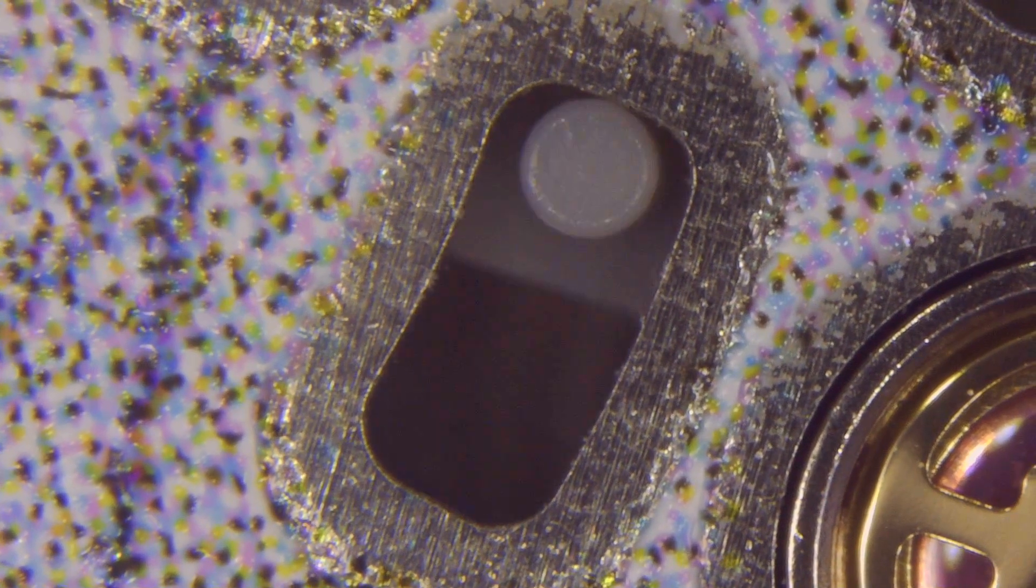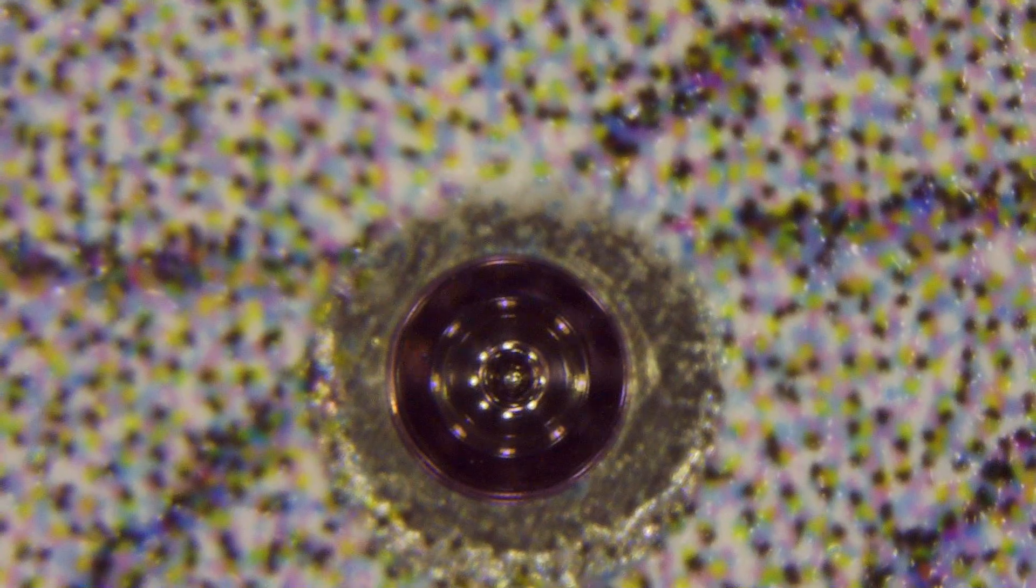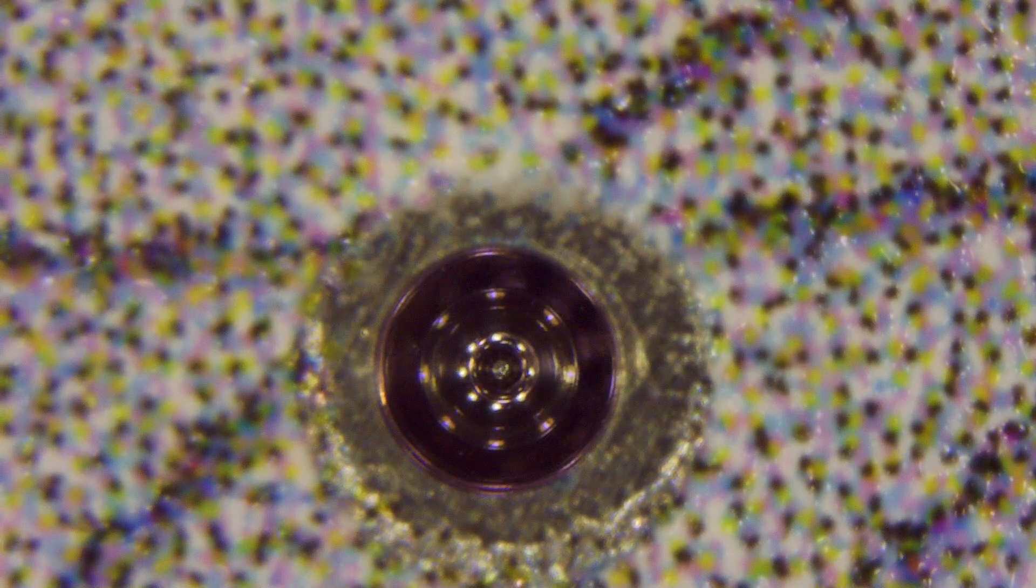Here you can see the pallet fork and it is plastic. And here is the escape wheel. It is also plastic. It seems like it has a metal pivot, which shows up just a little bit.